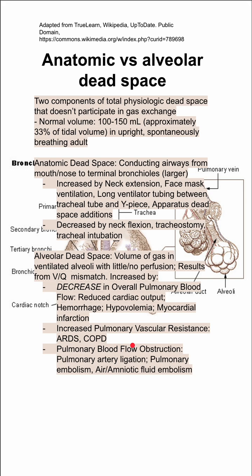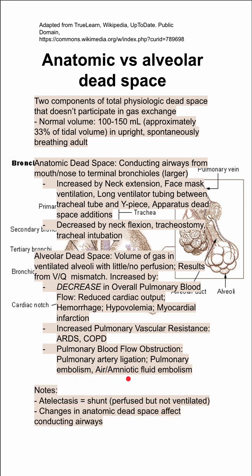You can also increase your alveolar dead space by pulmonary blood flow obstruction, like pulmonary artery ligation, pulmonary embolism, and embolisms like air and amniotic fluid embolisms. Lastly, just to differentiate: atelectasis is a shunt where you have perfusion but not ventilation, so it's not exactly dead space.